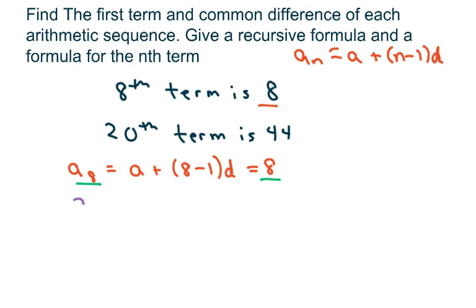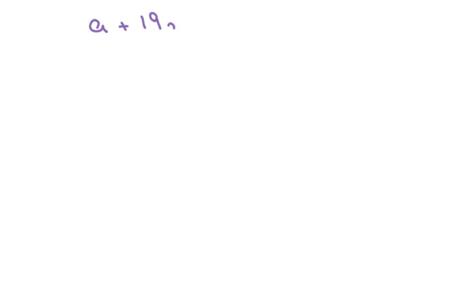Now my other equation: my 20th term is a plus 20 minus 1 times d, and that equals 44. So basically what we have is a plus 19d equals 44, and the other one we had is a plus 7d — I just rewrote these to make it a little easier.